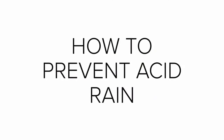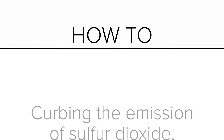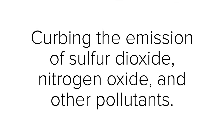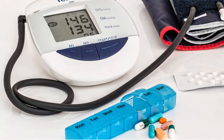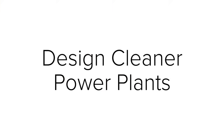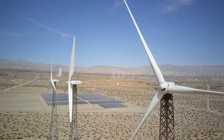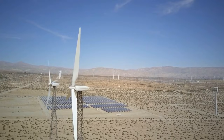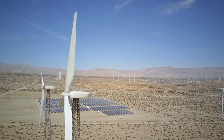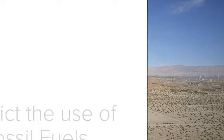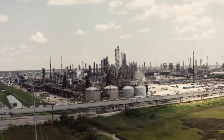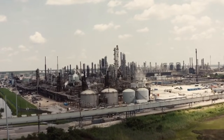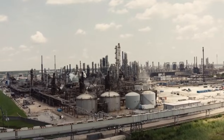How to prevent acid rain: we can only prevent acid rain by curbing the emission of sulfur dioxide, nitrogen oxide, and other pollutants. This will help conserve the environment and protect us from health complications. Designing cleaner power plants — the best approach is by using wind or solar energy, as wind turbines can generate electricity without emitting harmful gases, greatly lowering nitrogen oxides and sulfur dioxide levels. Restricting the use of fossil fuels is also essential, as burning coal produces sulfur dioxide and nitrogen oxides, which cause the formation of acid rain.